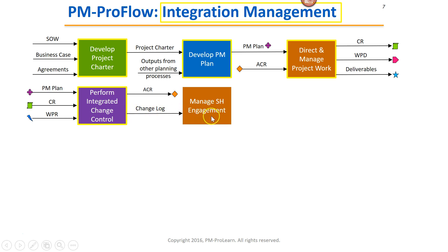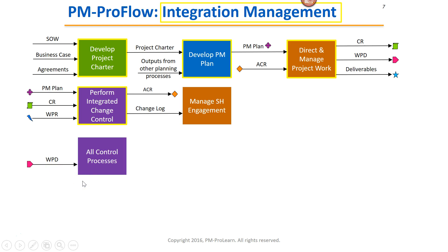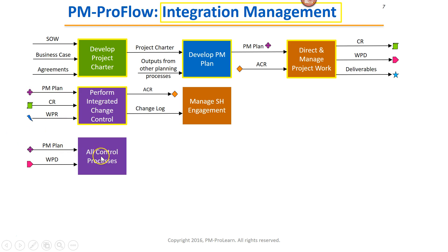So we're taking things out of Integration into Stakeholder Management. Work Performance Data — the next output of Direct and Manage Project Work — goes into all control processes. There are eight control processes in Table 3, TAC 1 of the PMBOK, such as Control Quality, Control Risk, Control Scope, and Control Schedule. Any process that starts with the word 'control' is represented by one purple box, and all monitoring and controlling processes use work performance data. They also use the PM plan, and the on-page connector shows it's an input to both Perform Integrated Change Control and all eight control processes.